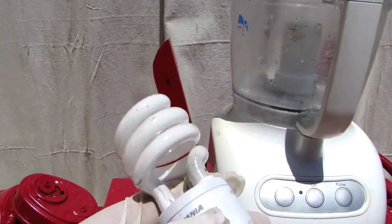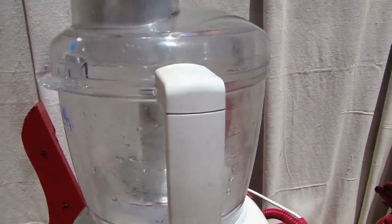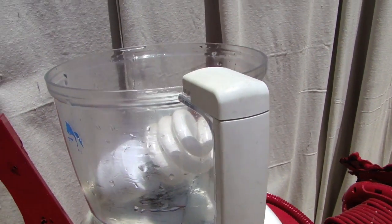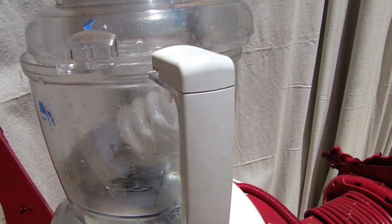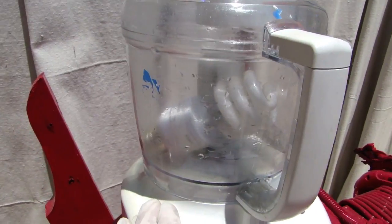Welcome to Episode 8 of Can It Food Process. Today we are going to be food processing a compact fluorescent light in the Shandar 3000 food processing bot.